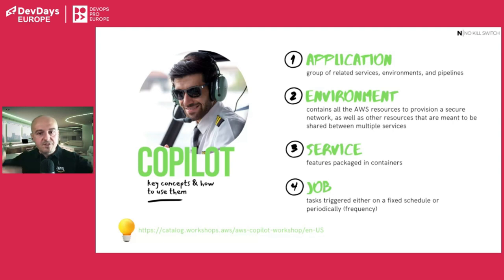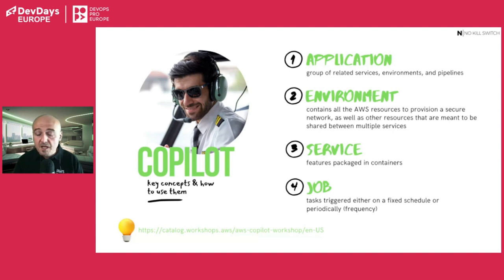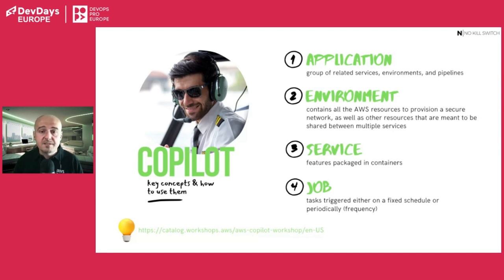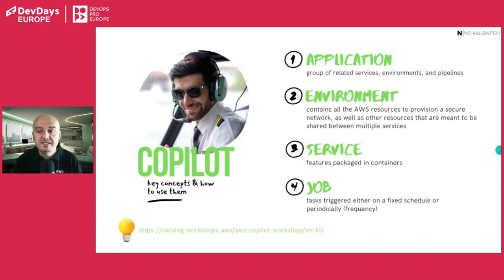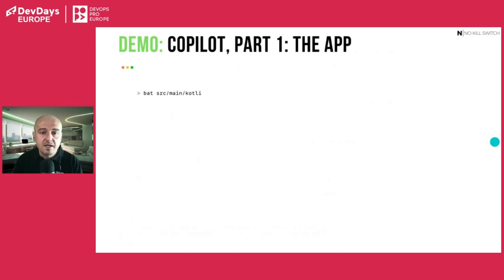Before the Copilot demo, let's clarify key concepts. An application is a bag of everything — services, environments, and jobs. An environment is an isolated set of services with a different purpose: dev, test, production — same services but different configurations. A service is a batch of features packaged in a container. A job is like a service but is a task triggered for a one-off purpose. These are the basic abstractions you need when working with Copilot.